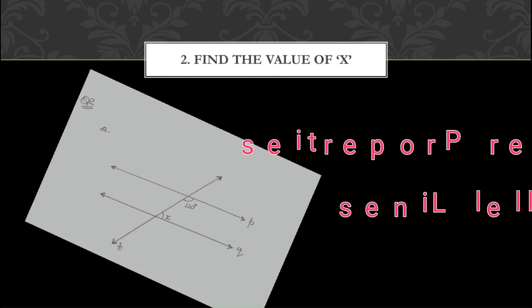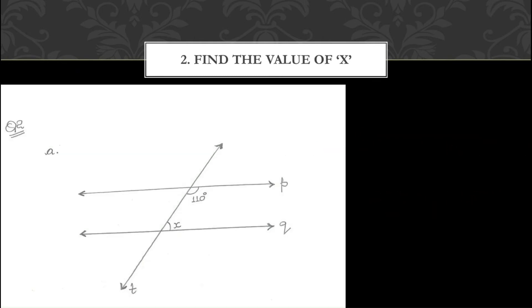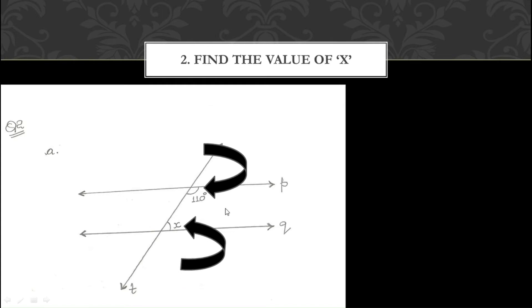This is figure A of question number 2. Here you see two parallel lines P and Q and a transversal T. The angles given are 110 degrees and X. These two angles are in the interior region of the parallel lines on the same side of the transversal, so they are called co-interior angles. The sum of co-interior angles is supplementary, meaning 180 degrees.